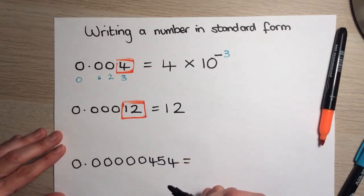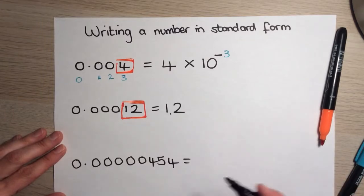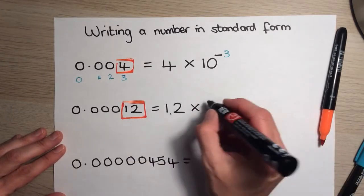Now, in the previous tutorial, we looked at how we can change that into a number between 1 and 10. Because, remember, a number in standard form needs to be between 1 and 10. So, if I put a decimal place between the 1 and the 2, it automatically becomes a number between 1 and 10. 1.2. I'm going to put a multiplication sign.